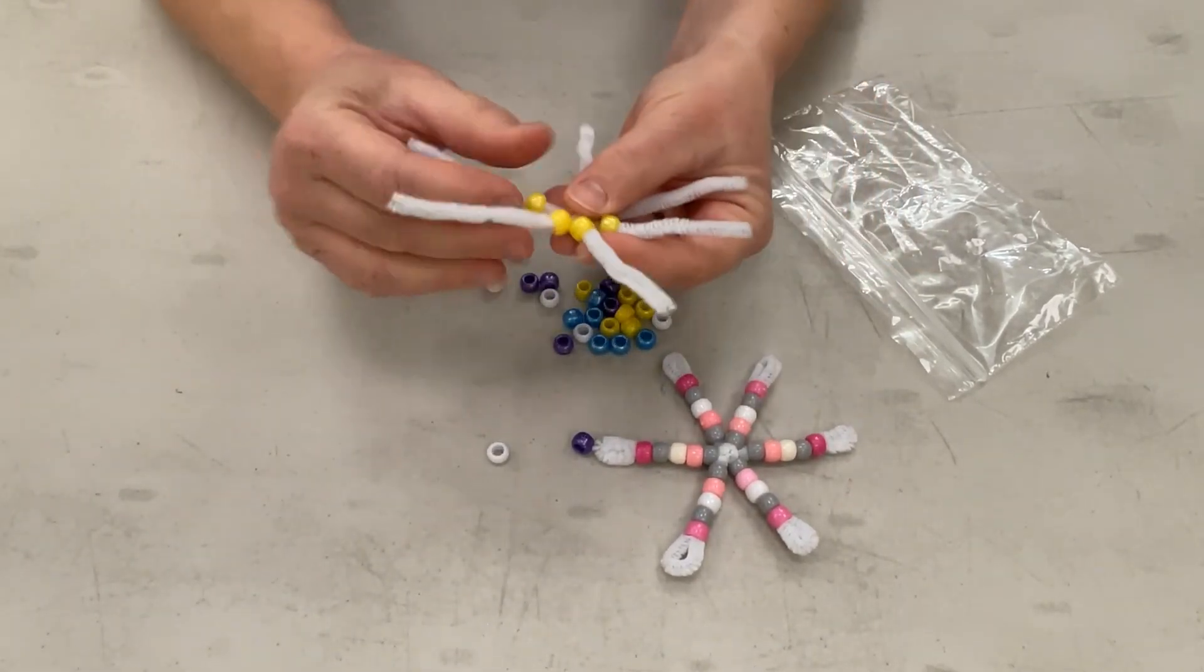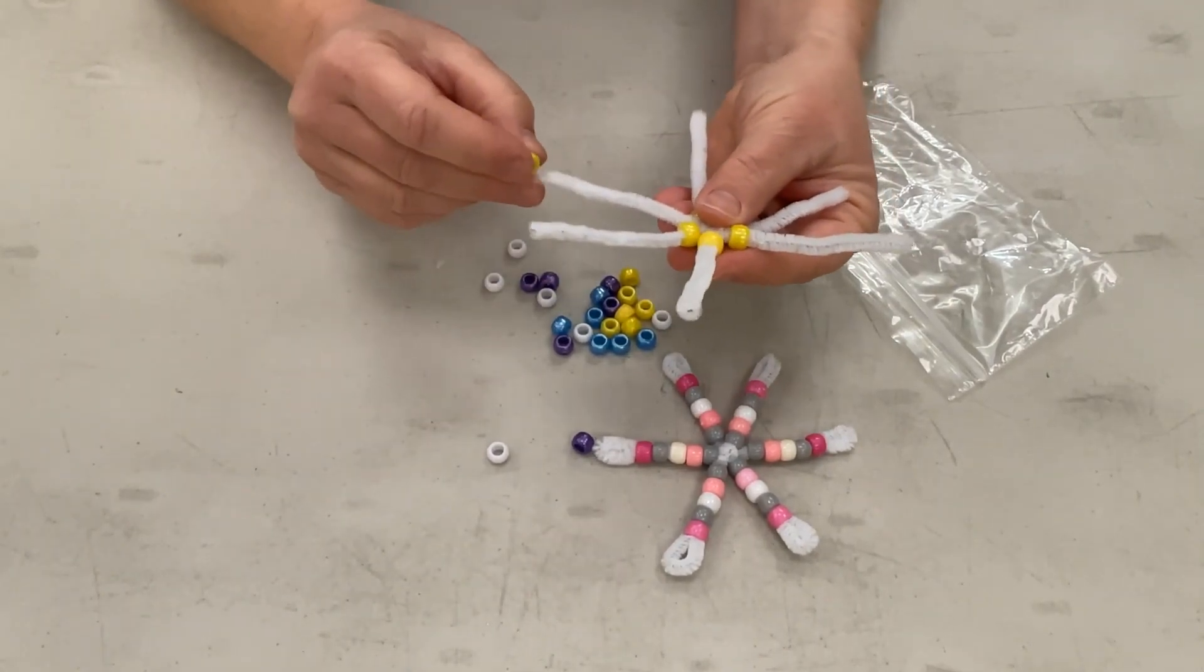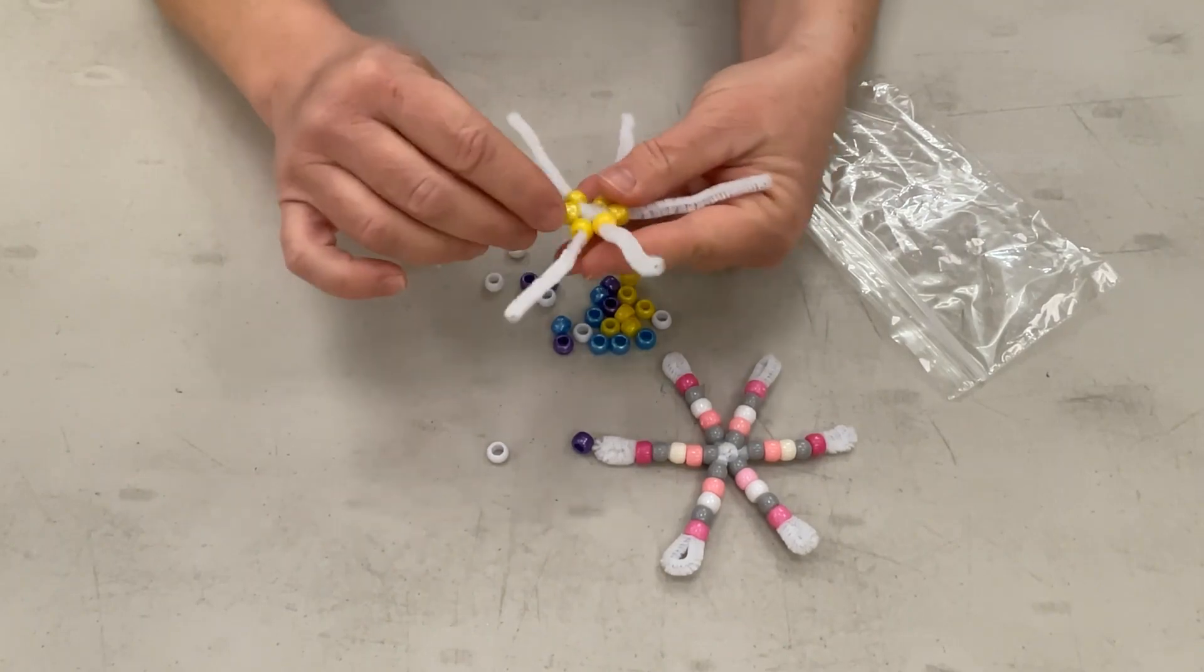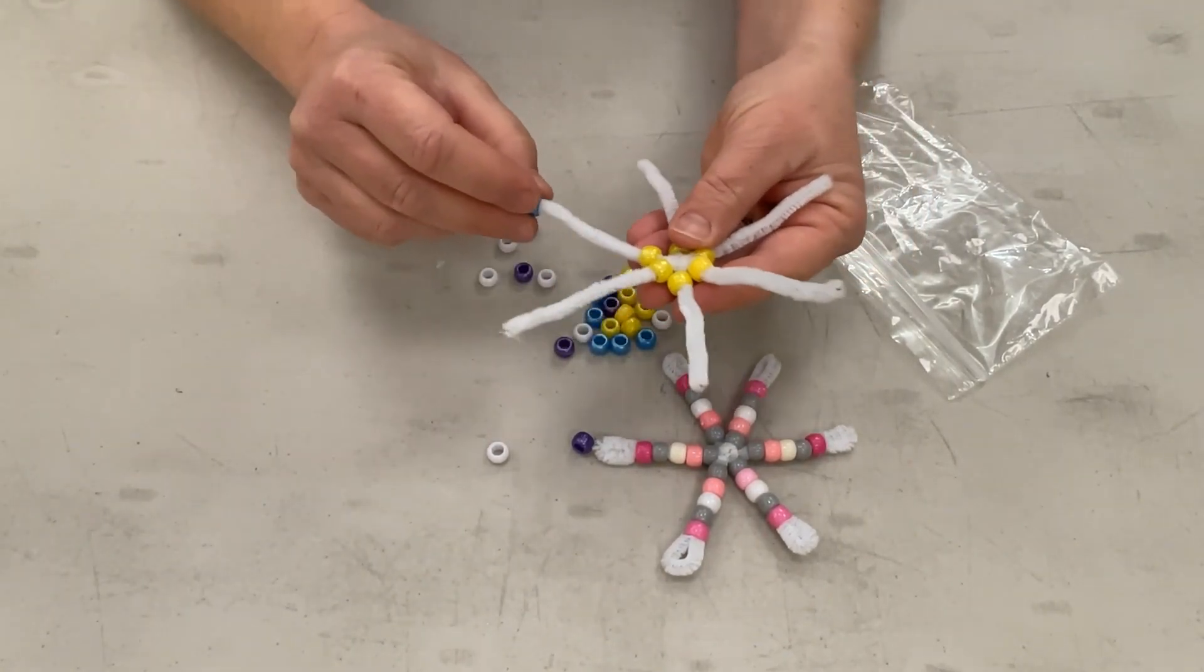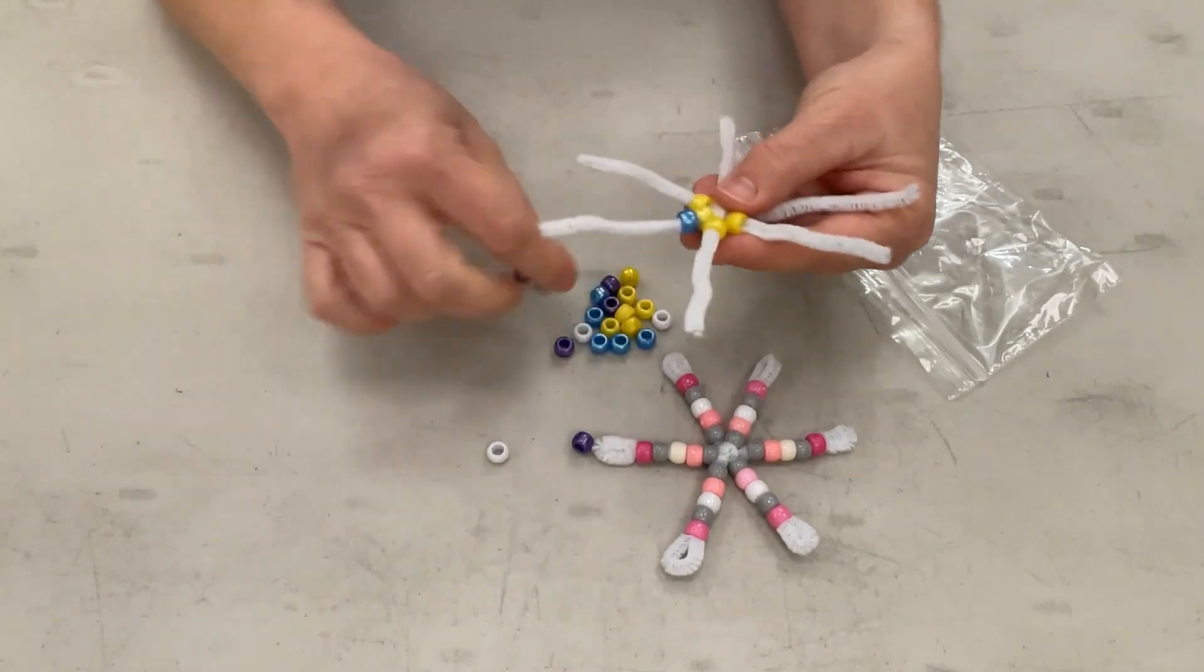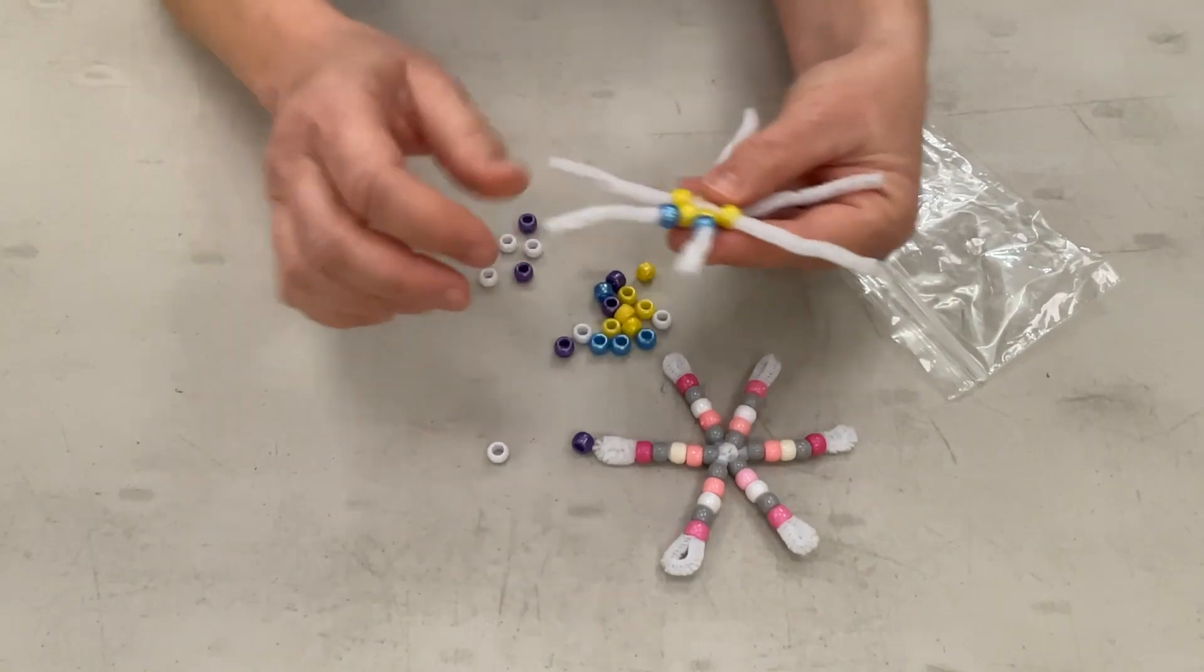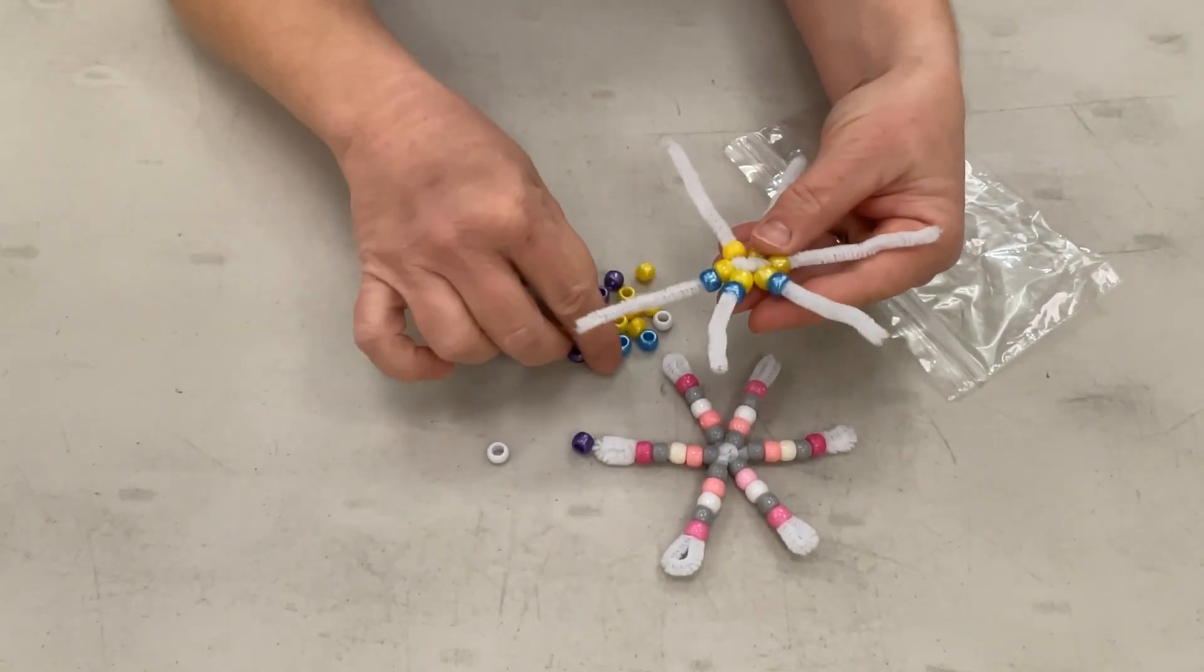All right, I've added my first round of beads. I used my yellow beads. You're going to add beads. You're going to need a total of 30 beads. Five beads for each arm, or I'm sorry, each leg of the snowflake. So five times six is 30.